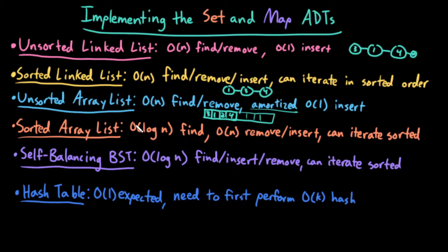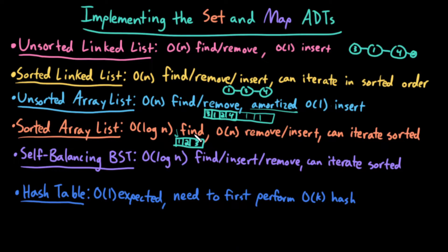A sorted array list would have big O of log N find. If I have my array list with elements one, two, three — it's sorted — I can use binary search to find an element, so this would be big O of log N. Removing or inserting an element would still be big O of N, because I might theoretically have to insert or remove at the front, which would cause me to shift over a bunch of different elements. But one nice feature, in addition to the faster find operation, is that I can iterate over my array list in sorted order — in increasing from left to right, or decreasing from right to left.